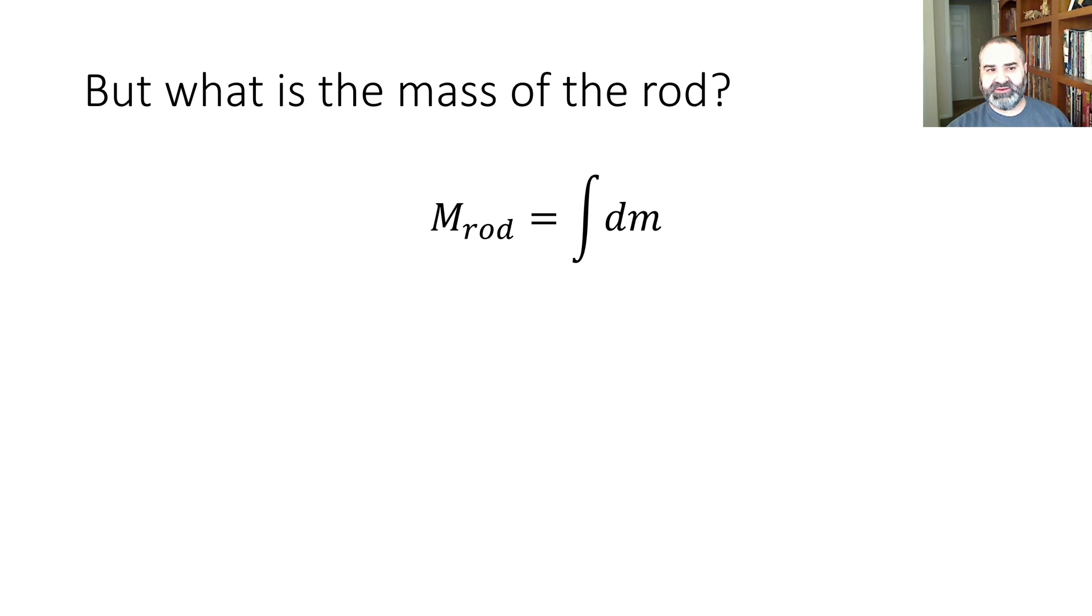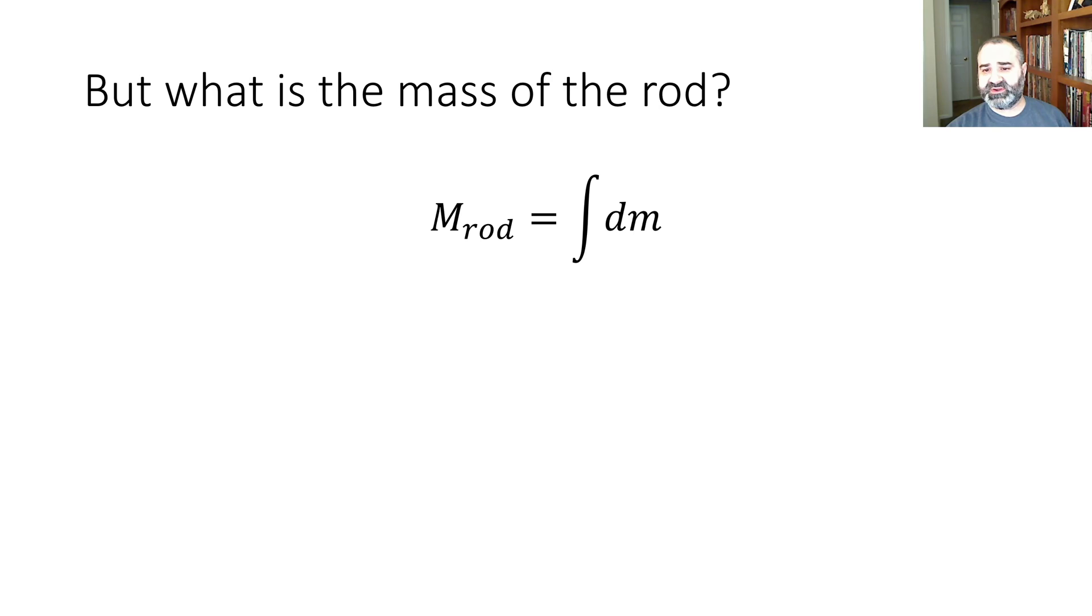So we're going to basically integrate lambda dx along the entire rod. And so that will look like this, completely worked out. And we see that the mass of the rod, as expected, is big M.